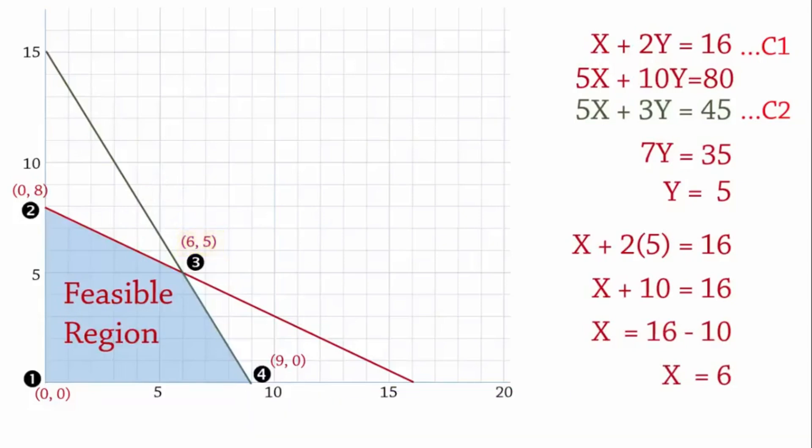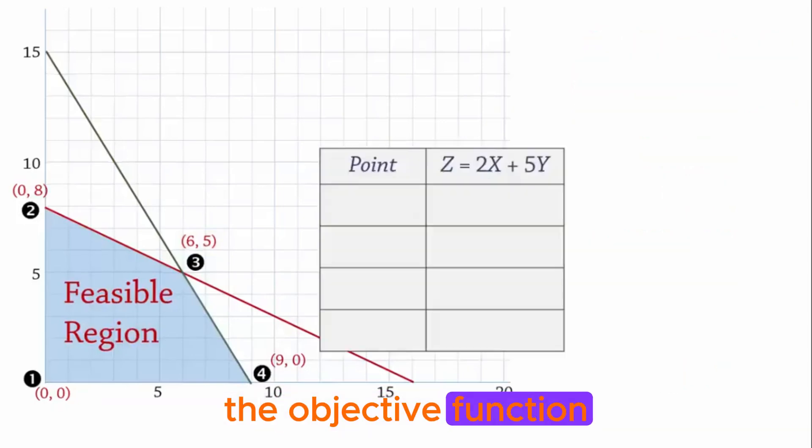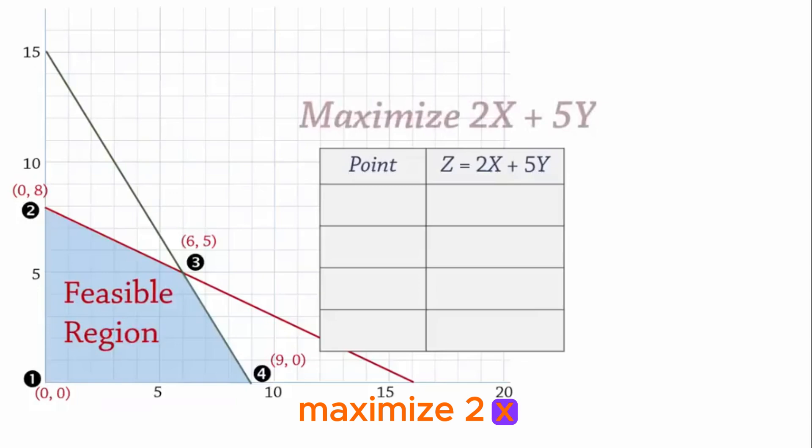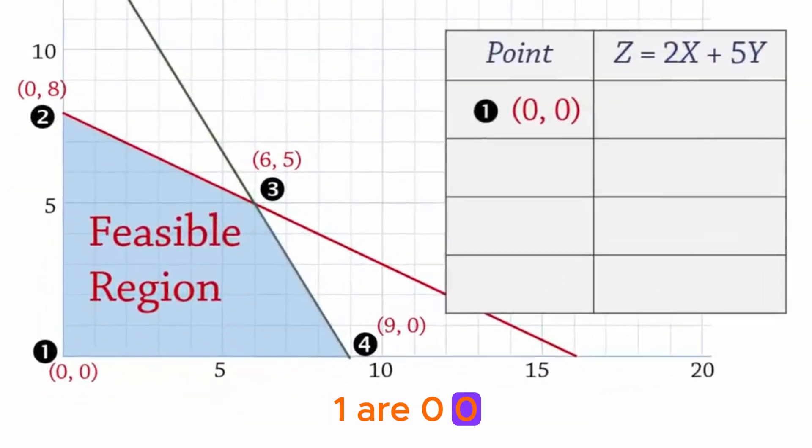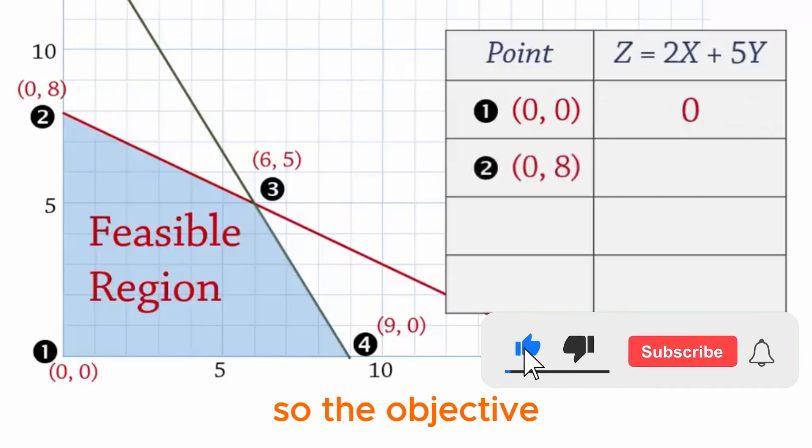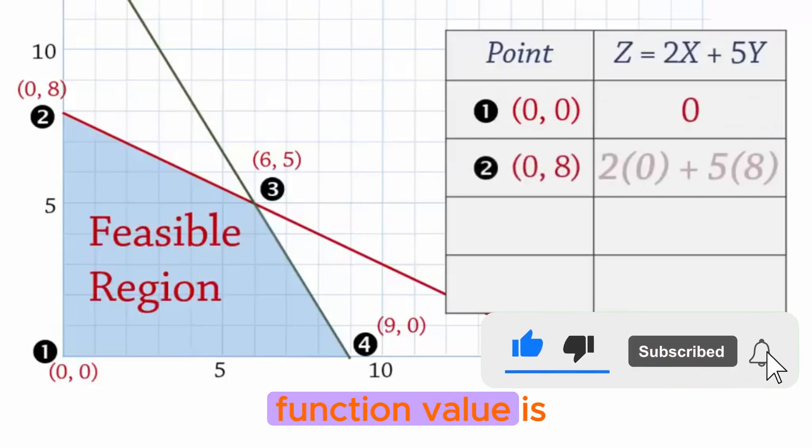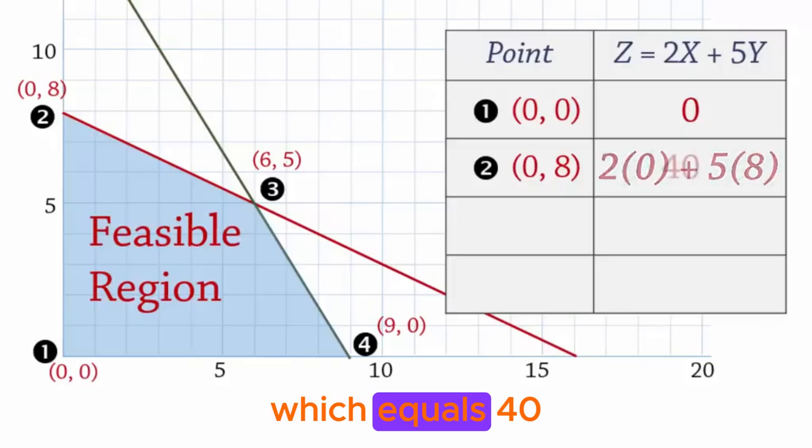Next we determine the optimal solution point by finding the corner point that gives the best value of the objective function. The objective function was to maximize 2X plus 5Y. As you can see here, the objective function or its value is sometimes represented with Z. So now, the XY coordinates at point 1 are 0, 0, and substituting that in the objective function gives 2 times 0 plus 5 times 0 which equals 0. And at point 2, we have 0, 8, so the objective function value is 2 times 0 plus 5 times 8 which equals 40.